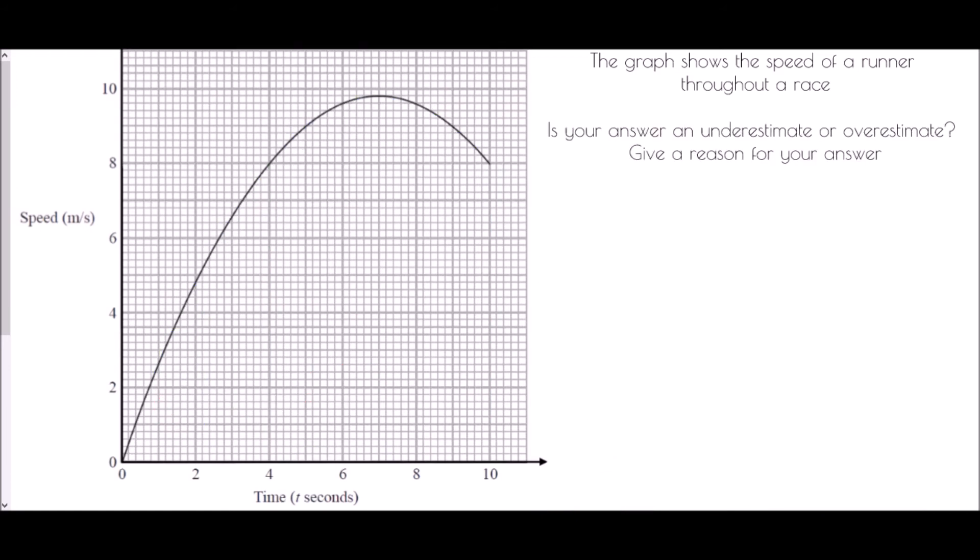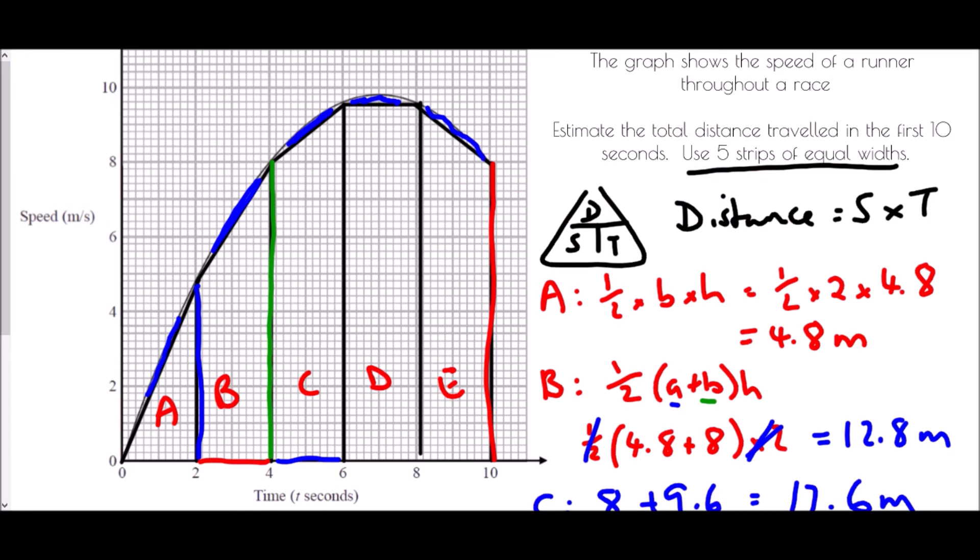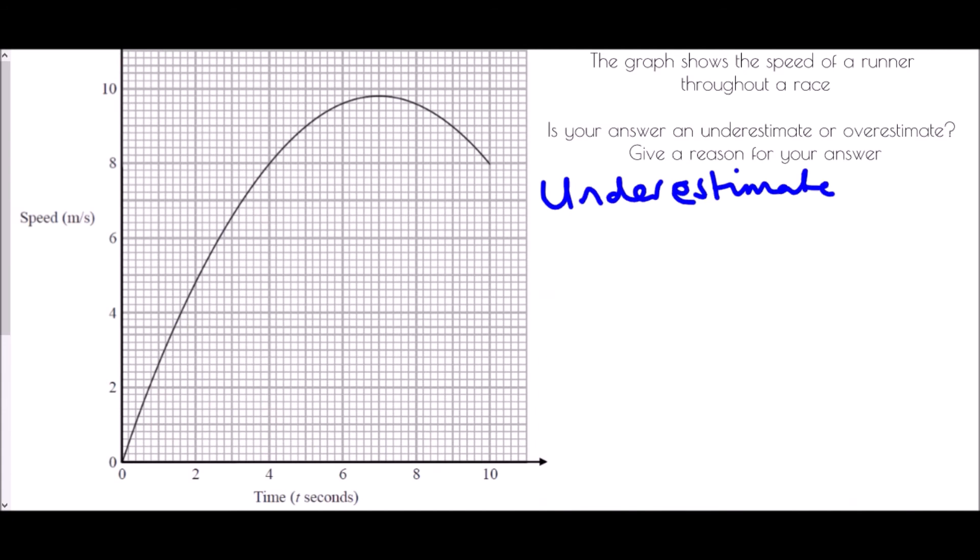And therefore, our estimate is an underestimate. And that is because all of our lines, if we have a look at them, every straight line that we drew in was under the curve. And so because it was under the curve, it means we have an underestimate. All lines drawn were under the curve.